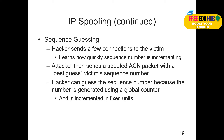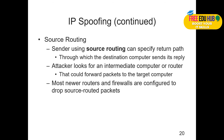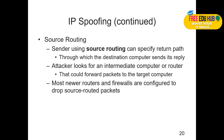A hacker can determine the sequence number because it is generated by a global counter incrementing in a fixed manner. In IP spoofing using source routing, the attacker can specify the return path through which the destination computer sends its reply. When a router is constantly forwarding packets between a known source and destination, it creates routing tables that can be hijacked to route traffic in a different direction. Most new routers and firewalls are configured to drop source-routed packets to prevent this.